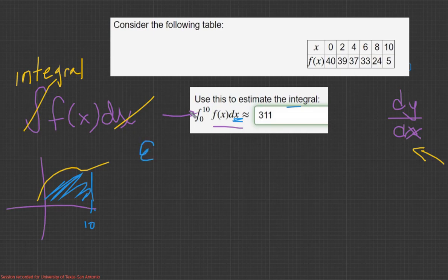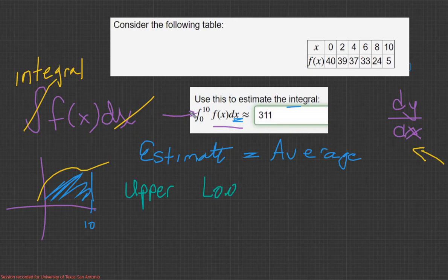An estimate means to find the average. All right, how do you find an average? Well, you find the actual upper, and you find the lower, and you add them together, and you divide by 2.